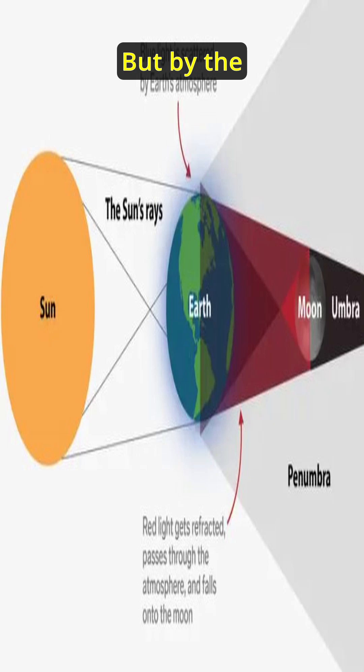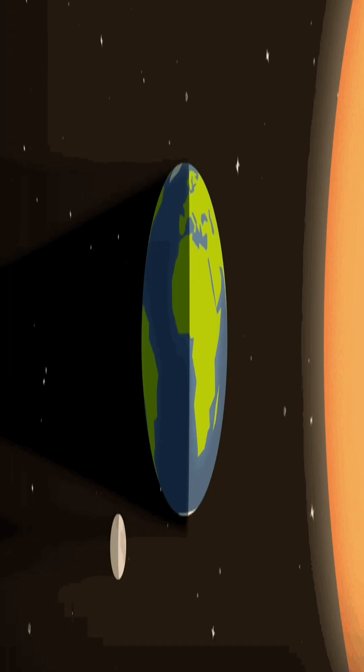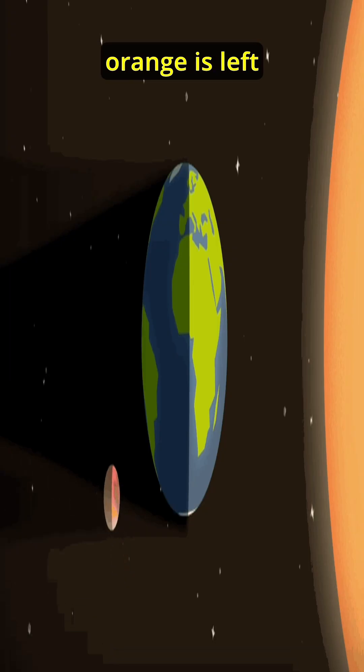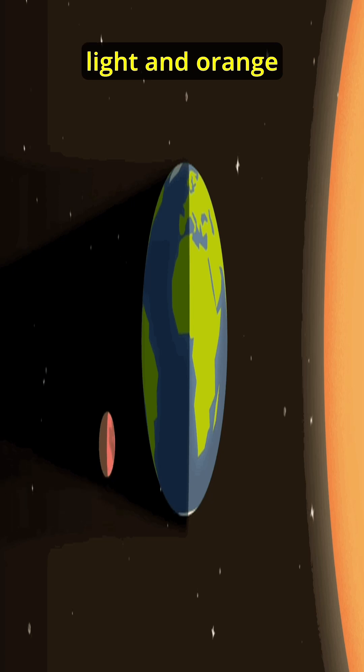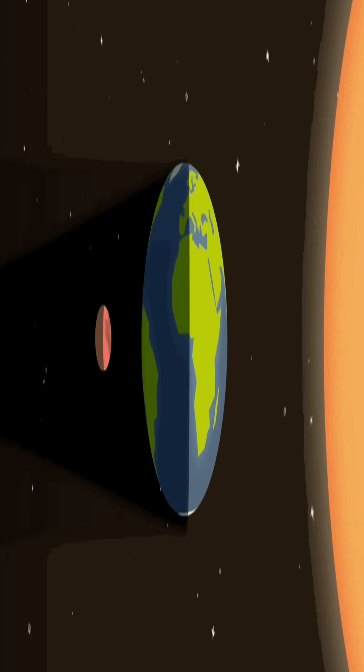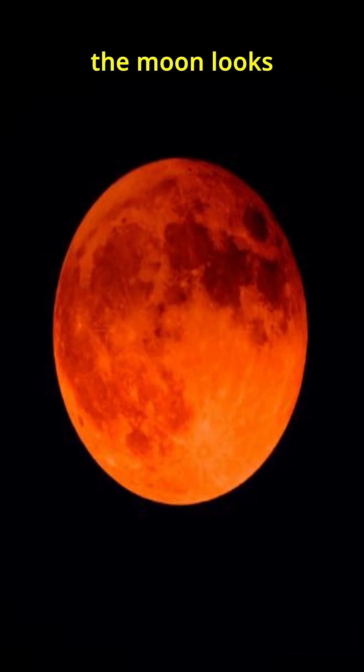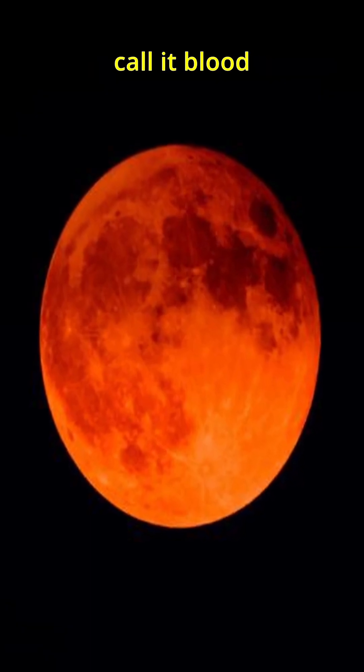But by the time the light reaches the moon, only red and orange is left out. So the reddish light and orange light manages to slip through the earth's atmosphere and falls on the moon's surface. That is why the moon looks red and we call it blood moon.